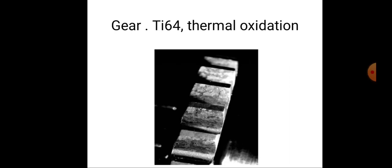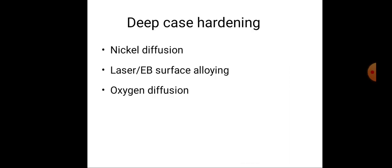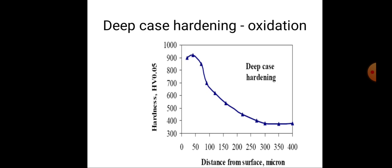Deep case hardening is done through nickel diffusion, via laser or electron beam (EB) surface alloying, oxidation, and diffusion. Looking at the deep case hardening diagram, hardness decreases as distance from the surface increases — the closer to the surface, the greater the hardness. Case hardening refers to hardening applied near the surface, so hardness is maximum at the top level and decreases at lower levels.